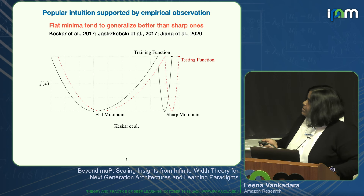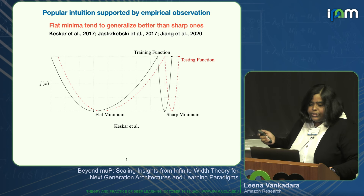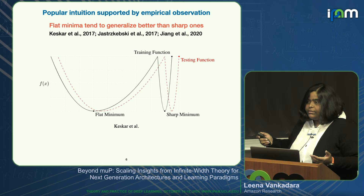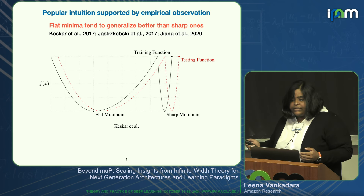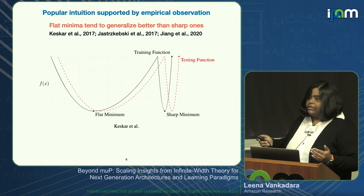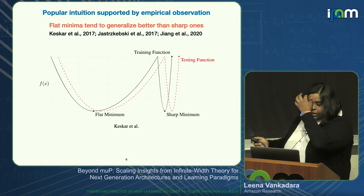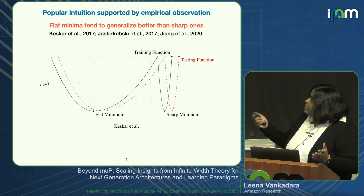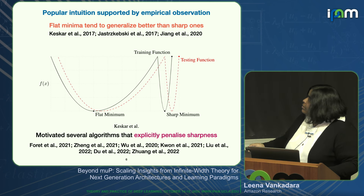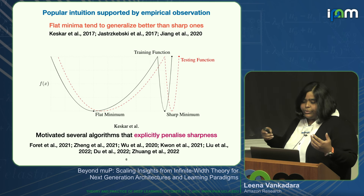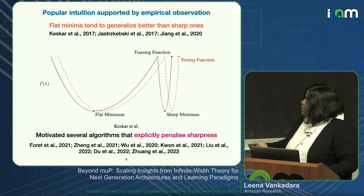Let me start by talking about sharpness-aware minimization. There's a popular belief in deep learning, supported by empirical observations, that flat minima tend to generalize better than sharper ones. The intuition is that for flatter minima, training and test functions tend to be closer together. This has motivated many algorithms that explicitly penalize sharpness to get better generalization.